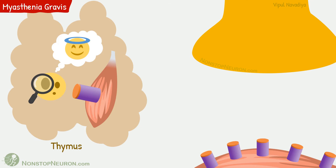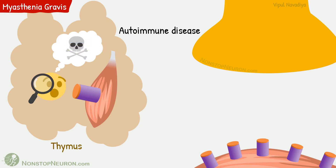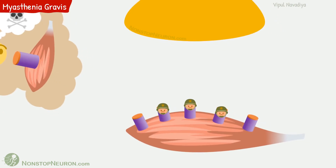Now let's see what happens in myasthenia gravis. Myasthenia gravis is an autoimmune disease. Commonly, the problem starts with the thymus — an abnormal thymus identifies acetylcholine receptors as foreign proteins, so antibodies are produced against them. These antibodies block the acetylcholine receptors at the neuromuscular junction, induce destruction of the receptors, and damage the muscle membrane, so the number of functional receptors is decreased.